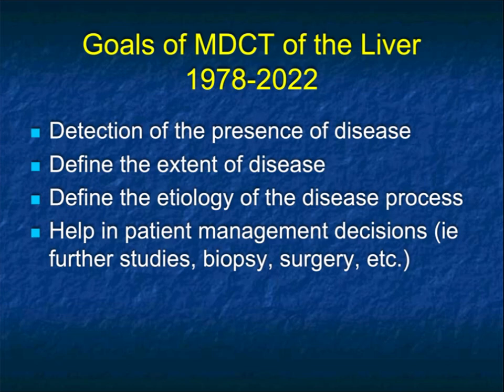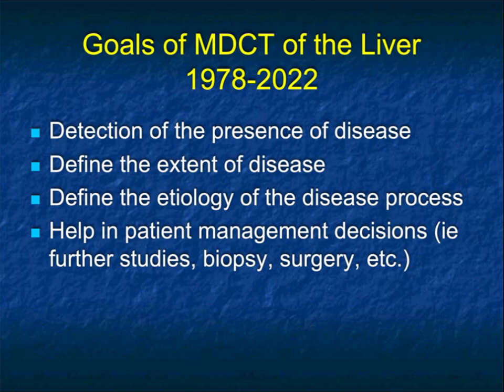Obviously, in the liver, the most common lesion is a cyst. But we also have other benign lesions, be it hemangioma or focal nodular hyperplasia. We also have infectious or inflammatory disease like abscesses, vascular processes like infarcts, and tumors — be they primary like hepatoma or cholangiocarcinoma — as well as metastatic disease. So not only detecting a lesion, but defining what it is, and then guiding therapy such as biopsy or resection.